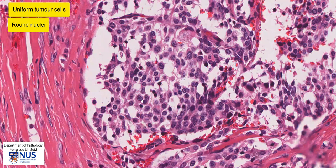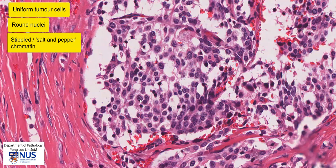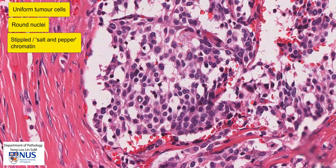Many of the cells have what we call stippled chromatin, which is quite coarsely granular. We can see that there are some bigger granules, for example here as well as here, and this is what we call salt and pepper pattern for chromatin.